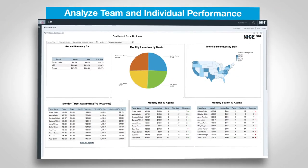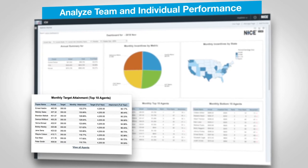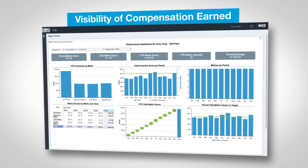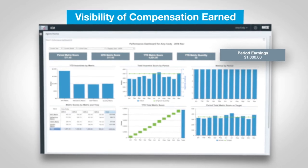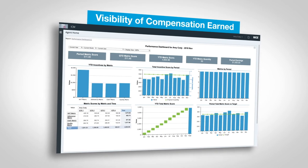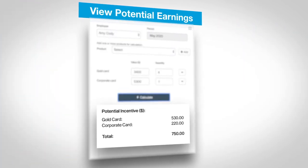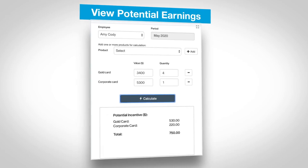Managers can analyze team performance by viewing metrics like target attainment and compensation plan breakdown. Agents can also view their compensation and performance in real time, which increases engagement and motivation and aligns behavior with company goals. Agents can also calculate their potential compensation, modeling improvements in performance to pay.